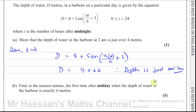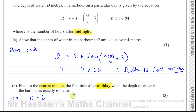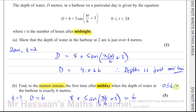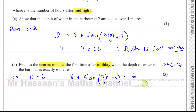For part B: find, to the nearest minute, the first time after midday — be careful, that's after midday, not after midnight — when the depth of water in the harbour is exactly 6 metres. So we want to find when 8 + 5 sin(πt/6 + 3) = 6, with t between 0 and 24.